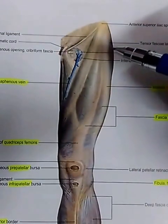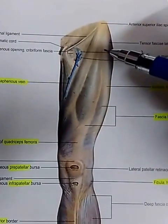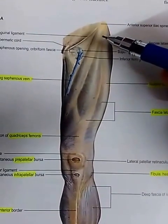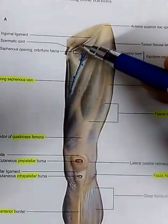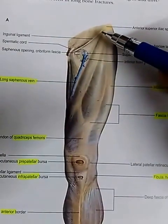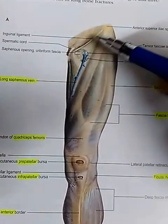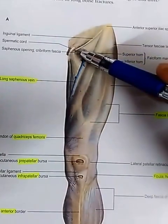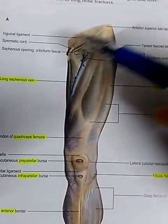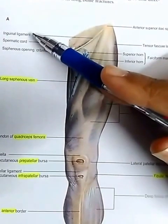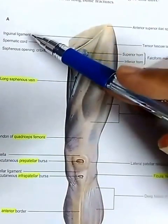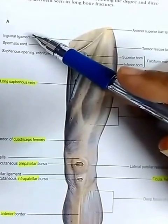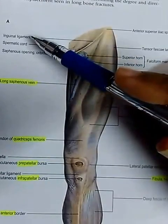Look carefully at this image, which can also be asked in your exams. This is an image from Gray's 41st edition. This is the inguinal ligament extending from the anterior superior iliac spine to the pubic tubercle. The inguinal ligament is also called Poupart's ligament and is formed by infolding of the external oblique aponeurosis.